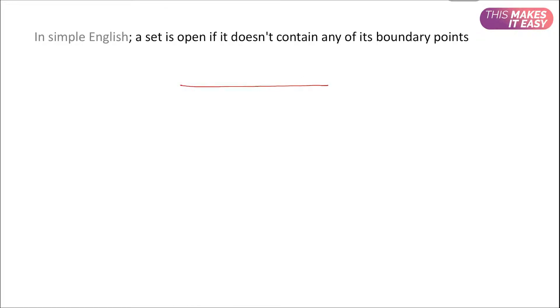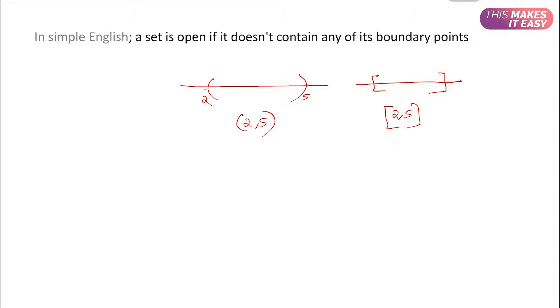A set is open if it doesn't contain any of its boundary points. For example, we take a simple set in the real line: our set is basically (2, 5). This is an open set. If it were a closed set we would denote it differently on the number line. Here 2 is one boundary point and 5 is another boundary point.